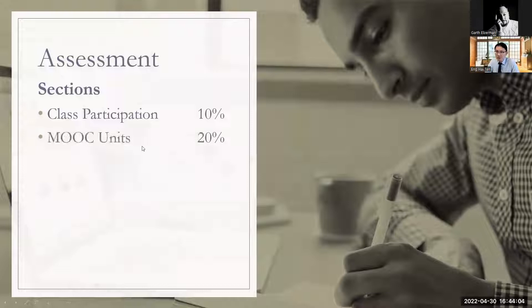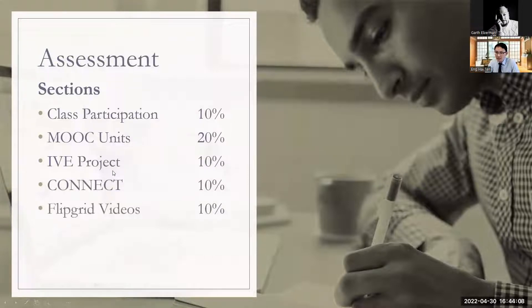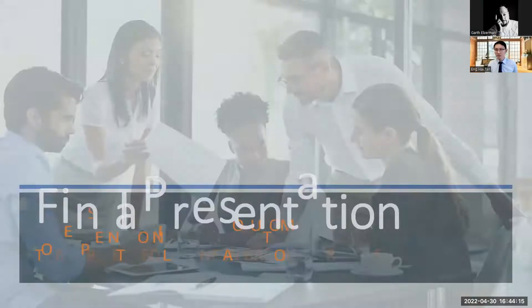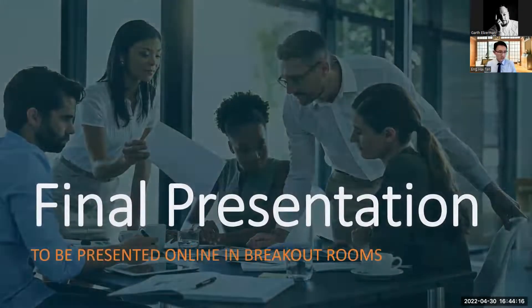So for assessment: class participation and Moodle is 20%, IVE 10%, Connect 10%, and Flipgrid — giving a total of 100%.